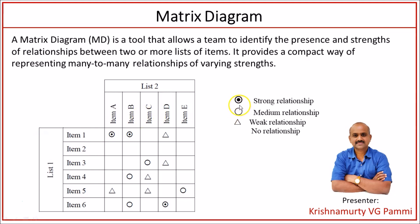We use symbols like a dot within a circle for a strong relationship. In our example, item 1 of list 1 is strongly related to item A of list 2. Similarly, item 6 of list 1 is strongly related to item D of list 2, and item 1 of list 1 is also strongly related to item B of list 2.